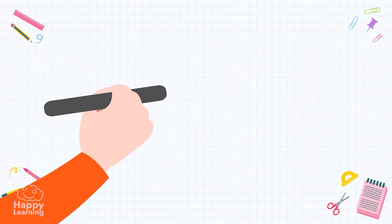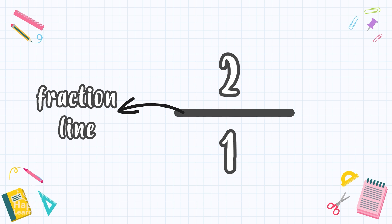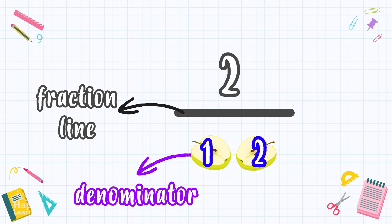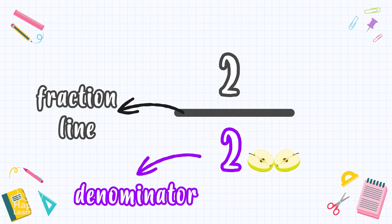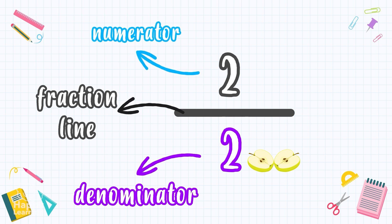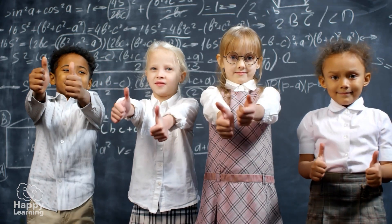But how do we express this in the language of mathematics? We draw a line called the fraction line and write two numbers. The bottom number is called the denominator. The denominator tells us the equal parts into which we've divided the unit — in this case the apple. It's a two because we divided it into two parts. The top number is called the numerator. The numerator indicates how many parts of the whole number we have taken — in this case it's one because the goat ate one half.